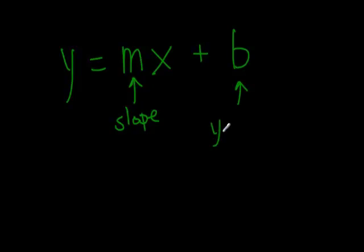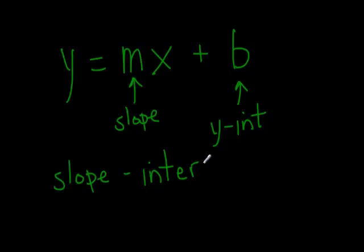The number on the end is called the y-intercept. OK, I'm not going to write the whole thing out. It's a big word. And this whole thing, this form, when you write an equation that has something and then an x plus a number, is called the slope-intercept form, or slope-intercept equation.